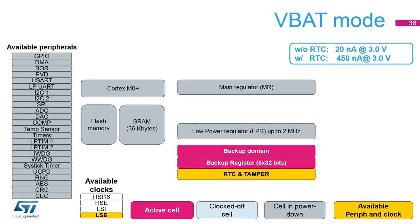In VBAT mode, the main regulator and the low-power regulator are powered down. The RTC and tamper clocked by the external low-speed oscillator can remain active. Only the external low-speed clock can be enabled. The only powered block is the backup domain that includes RTC and tampers, and the return to normal execution happens once VDD supply is provided. The VBAT consumption with RTC is around 450 nanoamps typical at 3 volts.